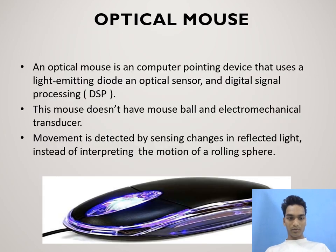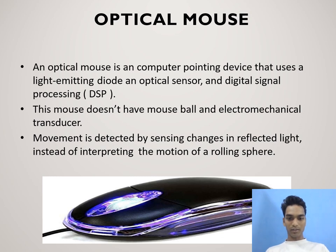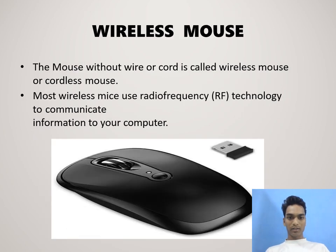Optical mouse: an optical mouse is a computer pointing device that uses a light-emitting diode, an optical sensor, and digital signal processing. This mouse does not have mouse balls or an electromechanical transducer. Movement is detected by sensing changes in reflected light, instead of interpreting the motion of a rolling sphere.